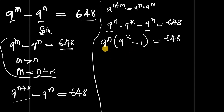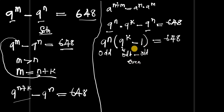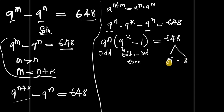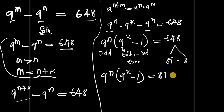Now, 9 to the power of n will always give an odd number. And 9 to the power of k minus 1: since 9 to the power of k is odd and 1 is odd, odd minus odd gives even — so the bracket gives an even number. Meanwhile 648 is even, so we need to split it into the form of odd times even. The only way to do that is 81 times 8, since 81 times 8 equals 648.